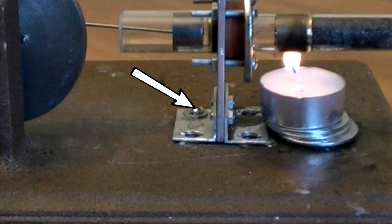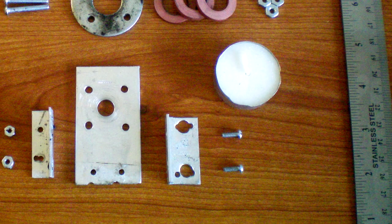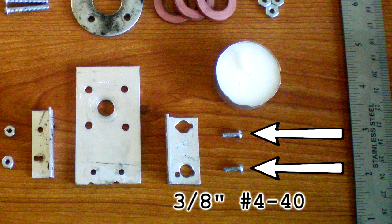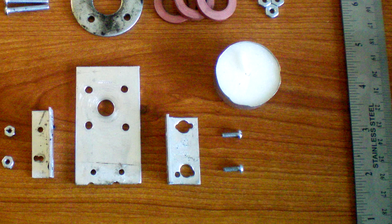The bolt running through the bracket and the base of engine is a 1 inch long number 6-32 bolt with a washer on each side of the base. These two bolts here are 3 eighths long and are number 4-40 bolts. These fit through two 1 eighth inch holes and secure the aluminum support column to the brackets.